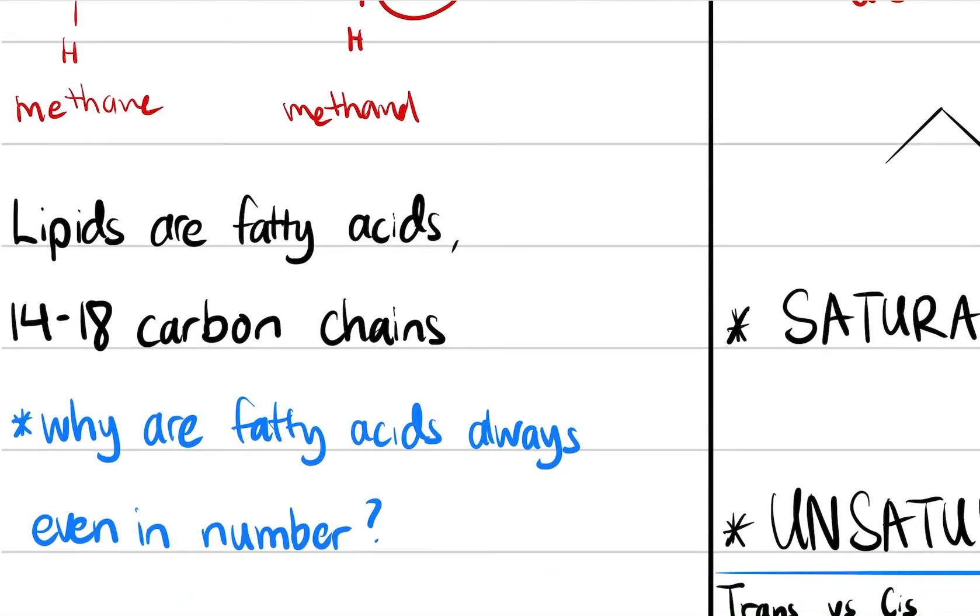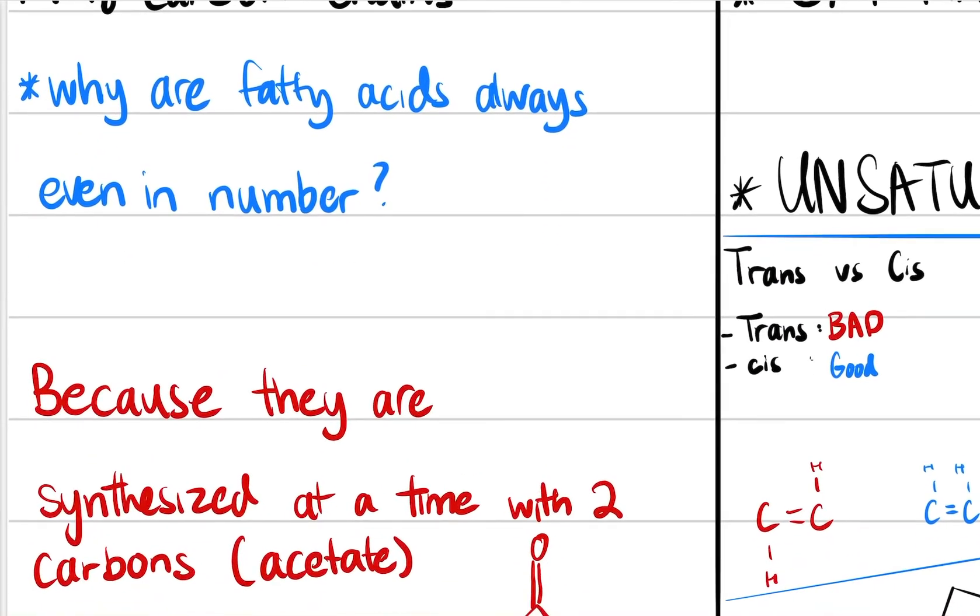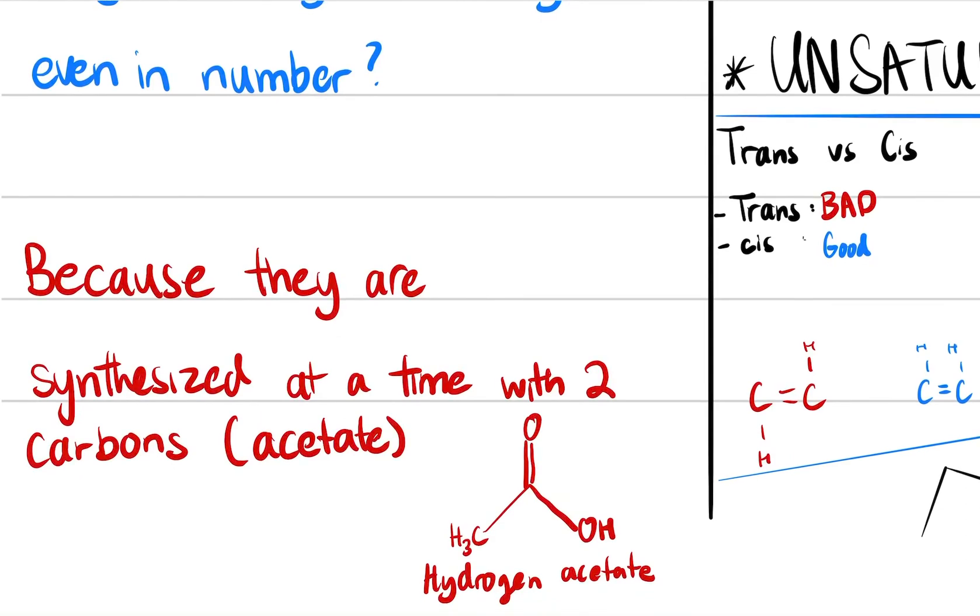And here's another question: why are fatty acids always in even number? This is going to make more sense in future videos if you look at the rest of the videos regarding lipids, specifically the triglyceride video, which explains the chemical formula and how it's composed. But the answer to this question is because they're synthesized at a time with two carbons, which is the acetate. How these lipid long chains are synthesized is through these acetate molecules.